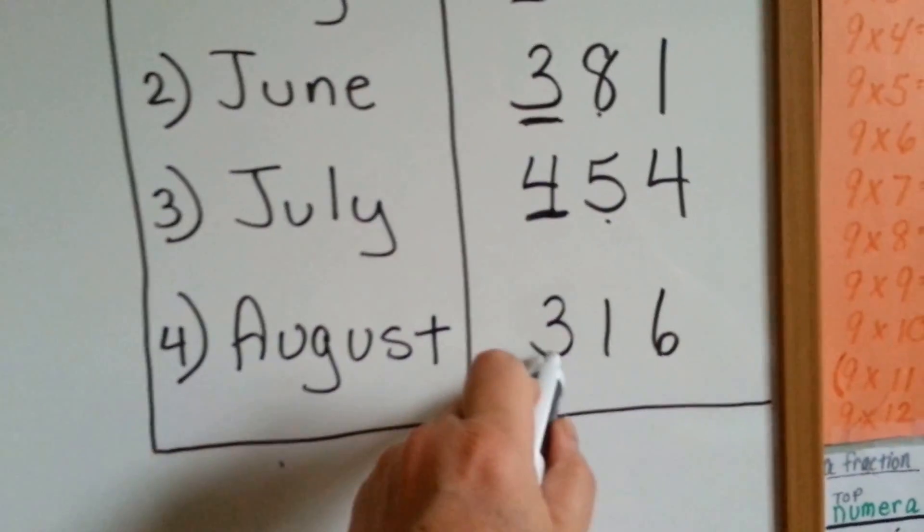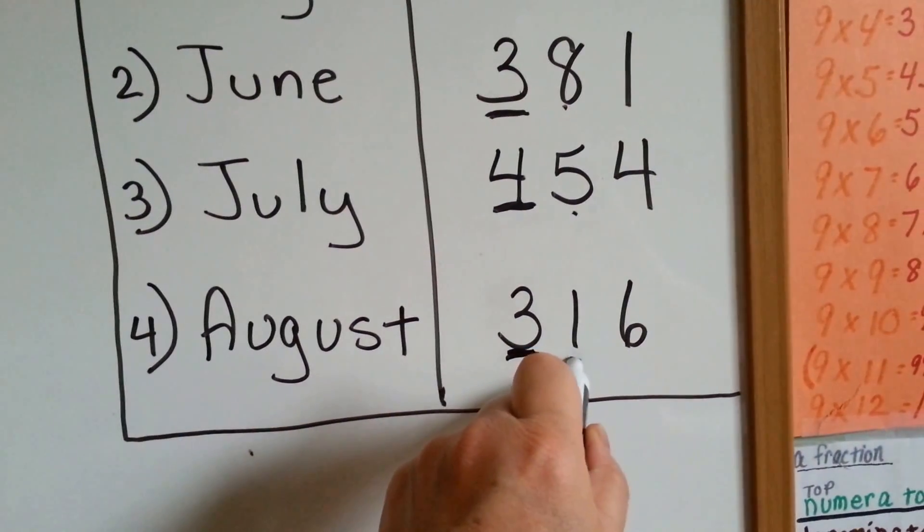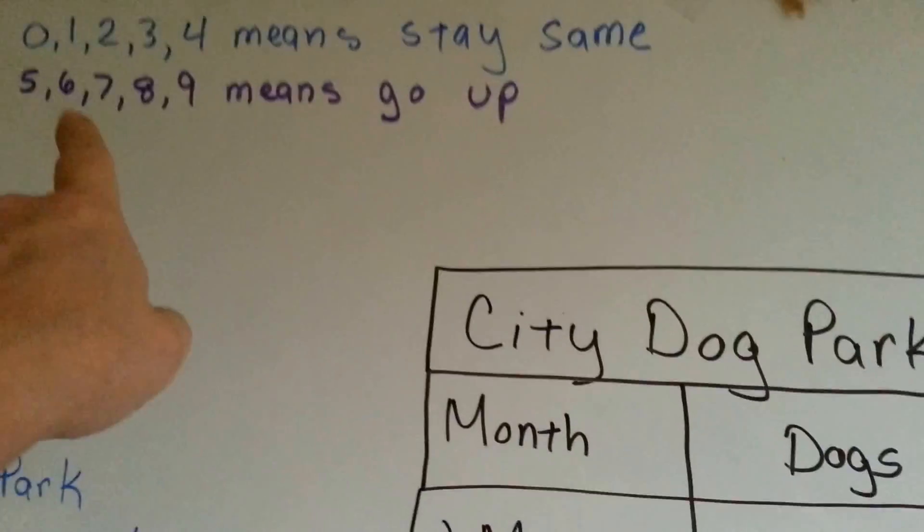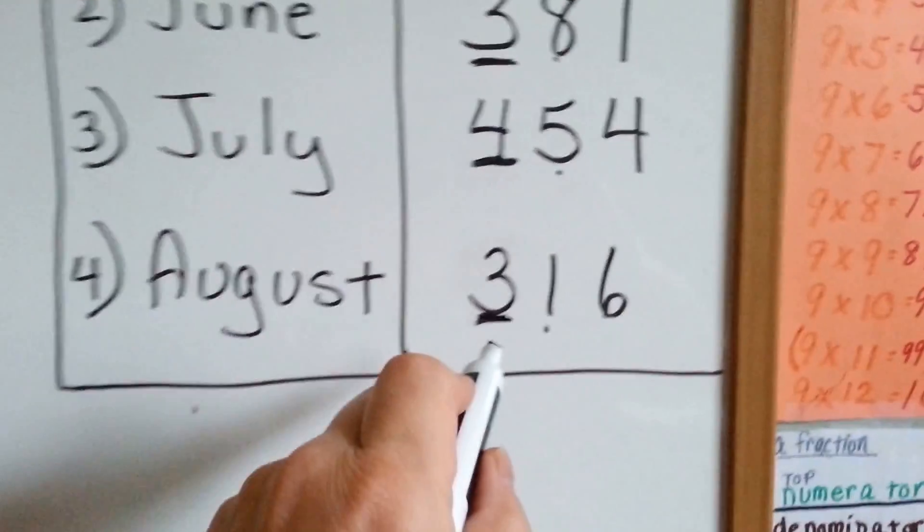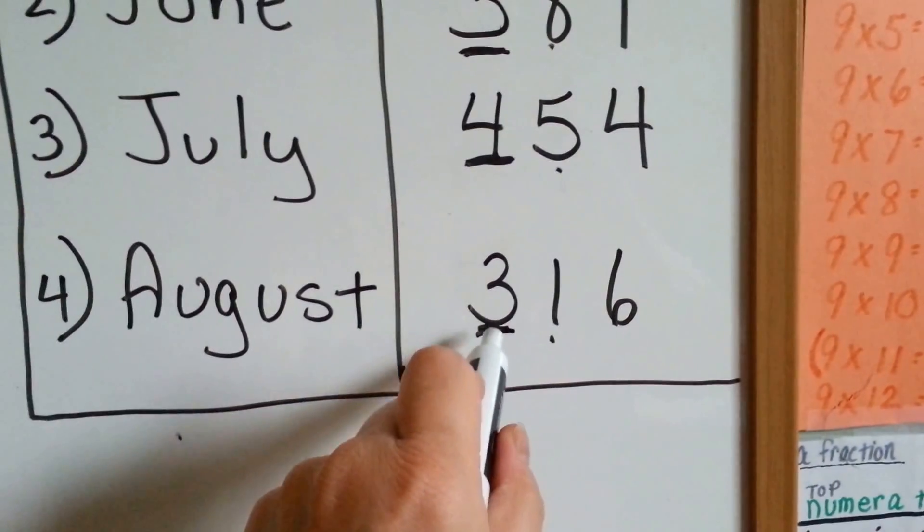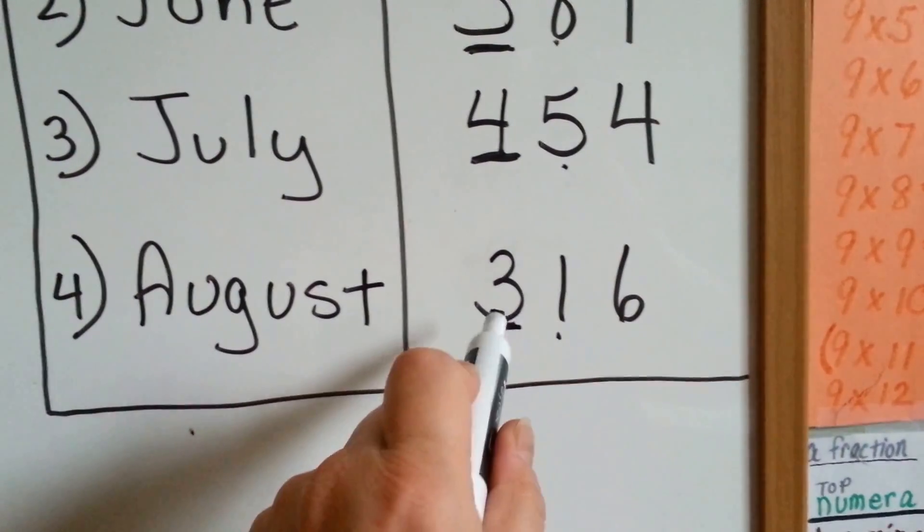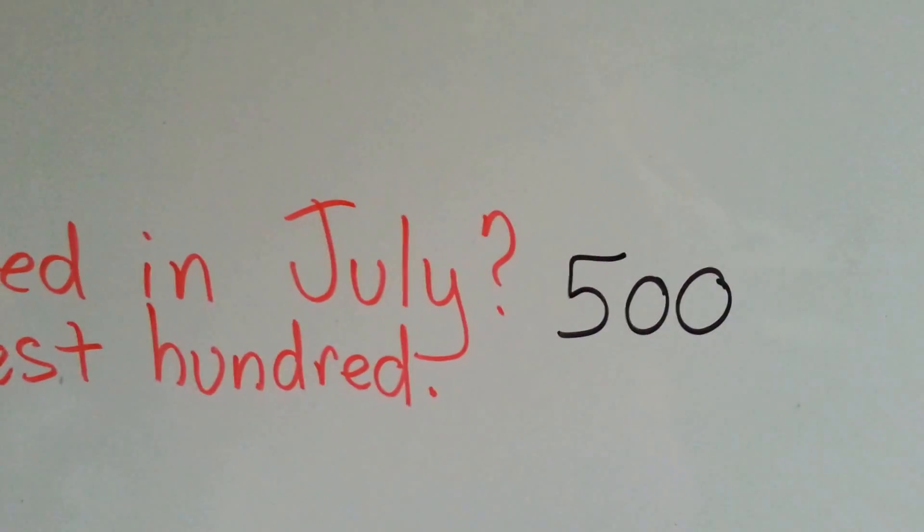How about August? Let's do it for August. Here's the hundreds place. The one to the right of it is a 1. 1 says to stay the same. So 3 is going to stay the same, so we can say approximately 300 dogs visited in August.